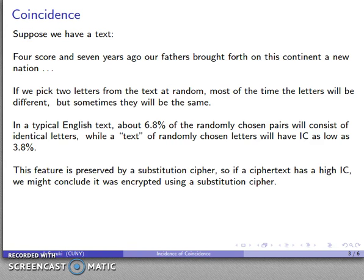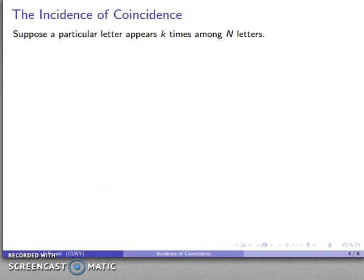This property is preserved by a substitution cipher. So if a ciphertext has a high index of coincidence, it is reasonable to conclude that it was produced using a substitution cipher. But how do we compute this index of coincidence?